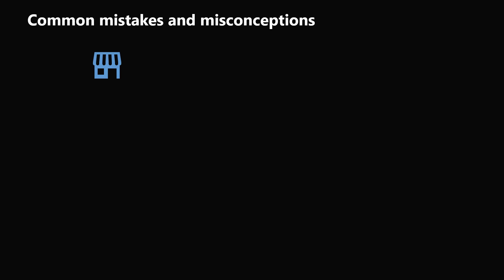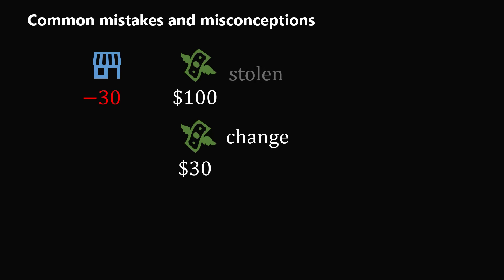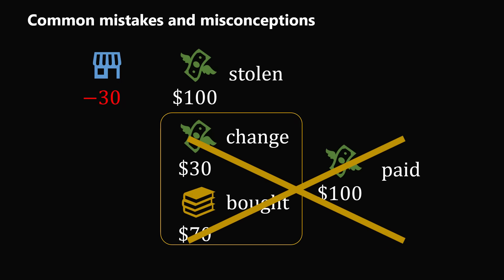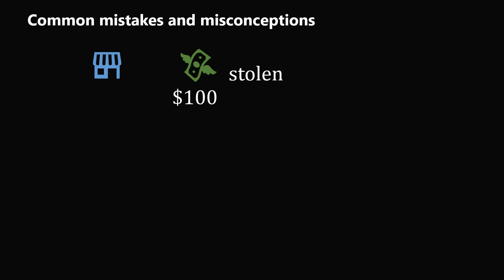For completeness, let's cover the final incorrect response of $30. These people focus only on the $30 of change that was given. But you have to account for the $100 that was stolen and the $70 of goods that were bought. The $30 of change and the $70 of goods were accompanied by $100 that was paid, so that transaction cancels out. When you look at the final accounting, it is just the $100 bill that was stolen — the store has lost $100.